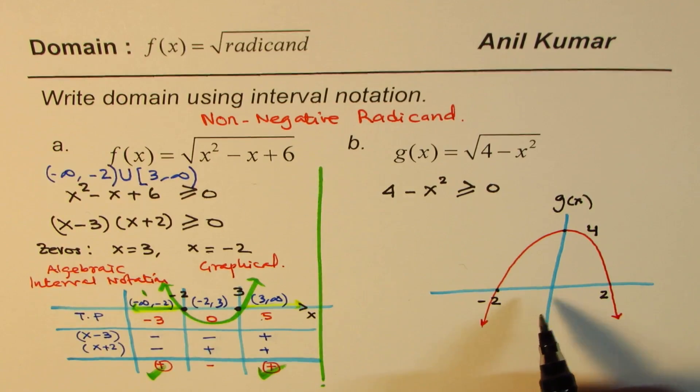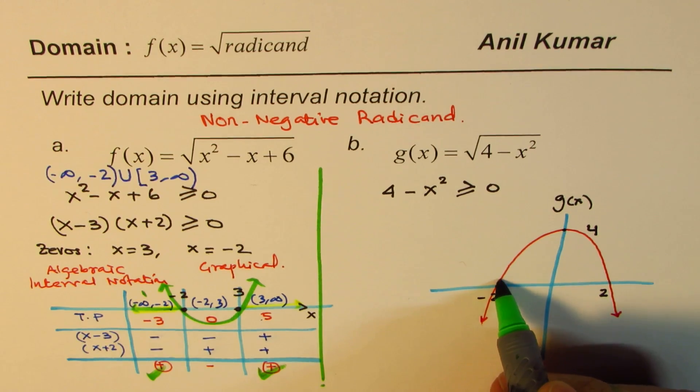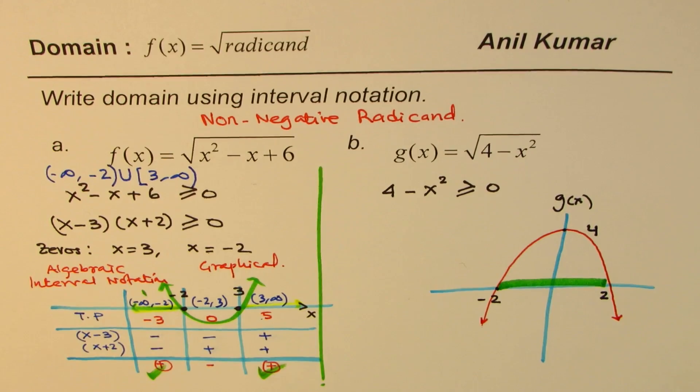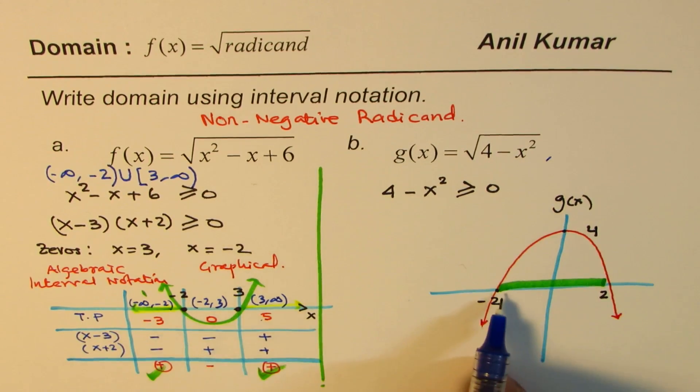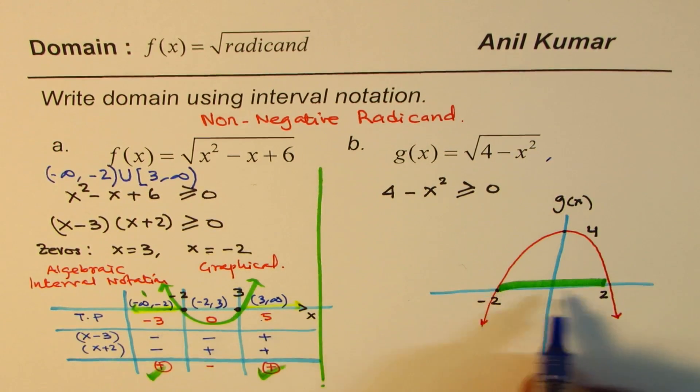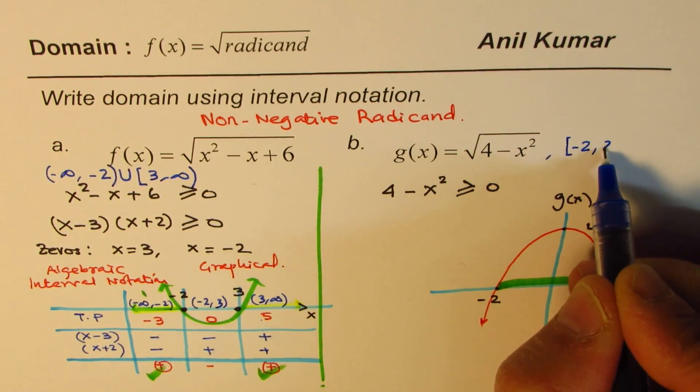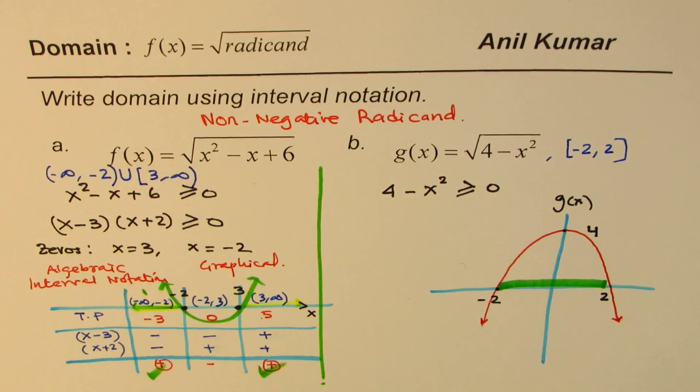So clearly from here, you can see that the positive portion is this. And therefore we can write down the domain of this function as the interval, which includes both of them from minus 2 to 2. So using the graph, it is so simple.